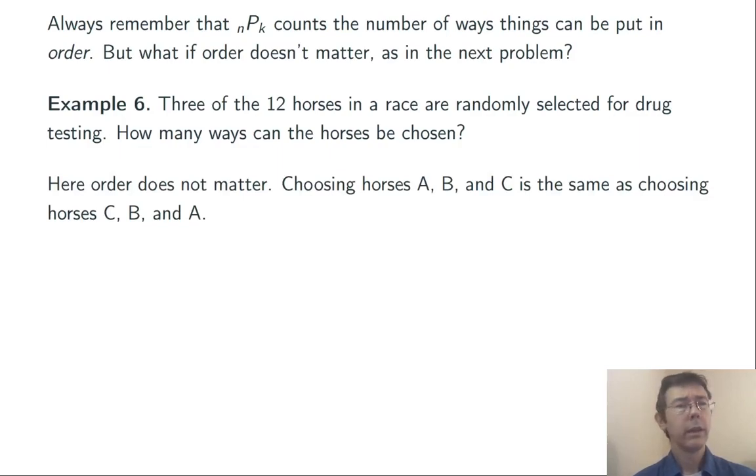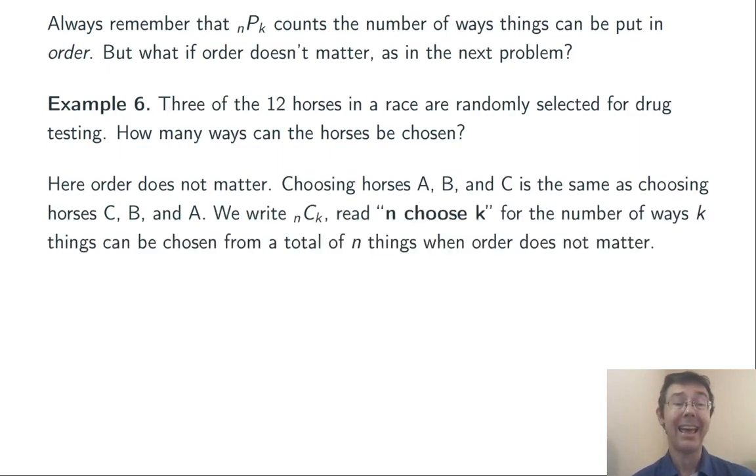Three of the 12 horses in a race are randomly selected for drug testing. How many ways can the horses be chosen? So, here, order does not matter. Choosing horses A, B, and C is exactly the same as choosing horses C, B, and A. We have notation for this, too. n C k, which we usually read n choose k,